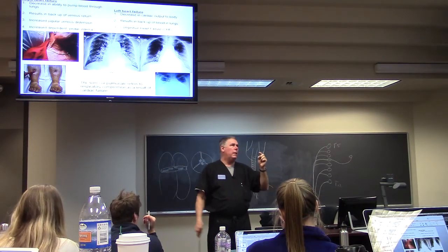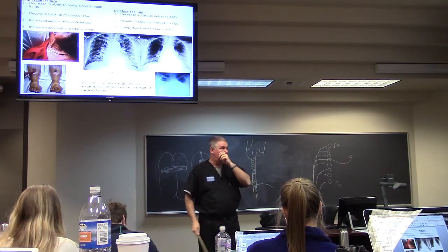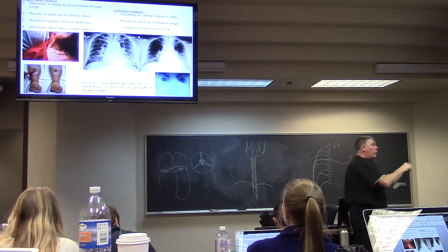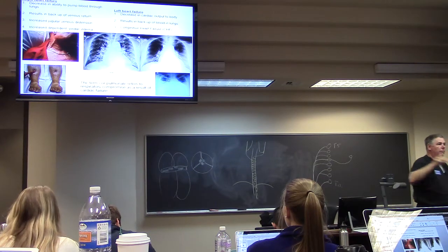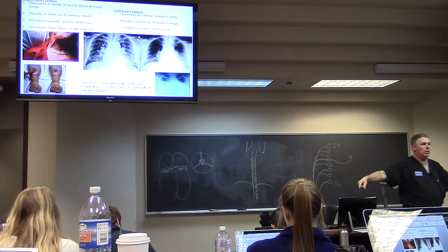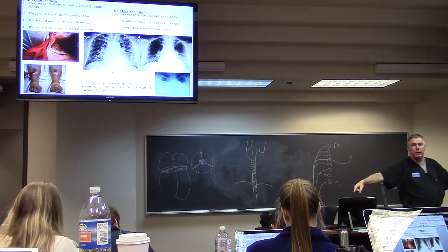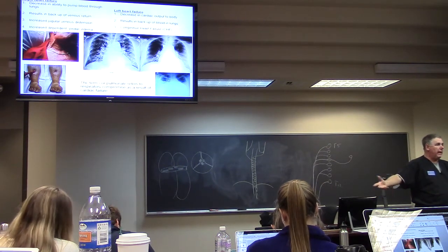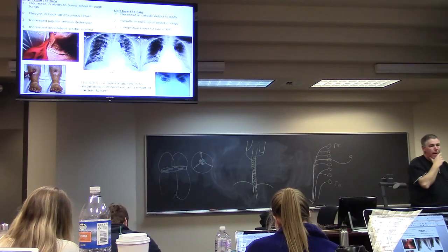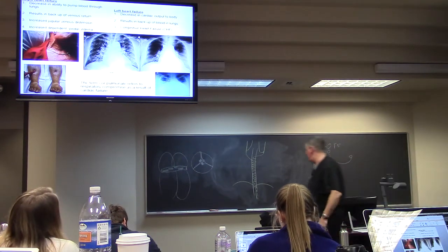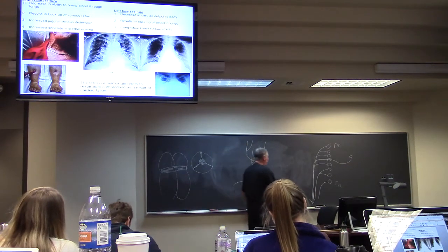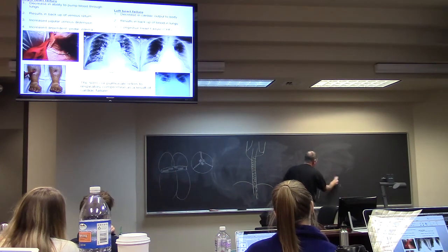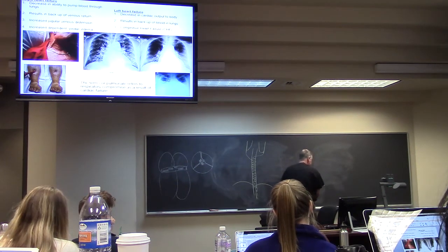The term cor pulmonale is used to express pulmonary problems as a result of left heart failure. The pathology is in the left heart, but you can't breathe — that's cor pulmonale. Now, when you're looking at a chest X-ray and trying to determine whether this person has cardiomegaly — an enlarged heart — this is the way you tell.